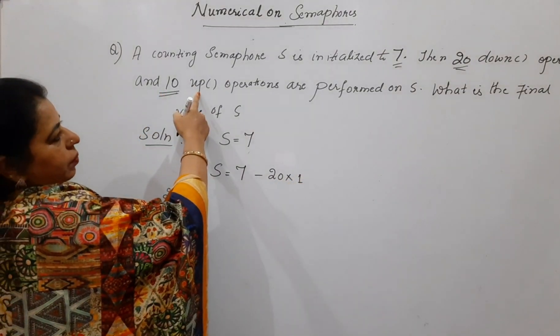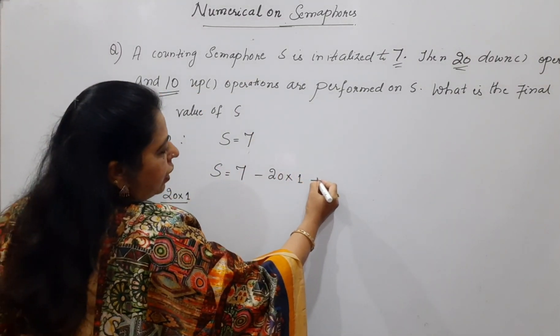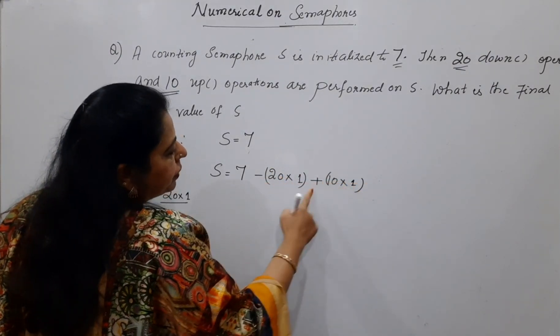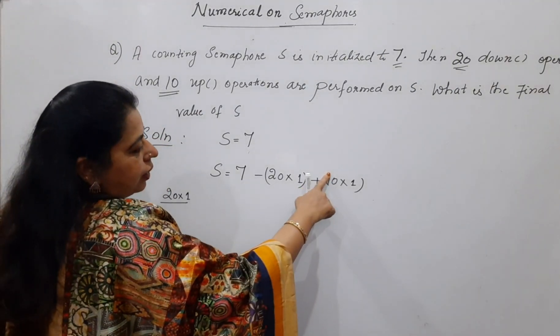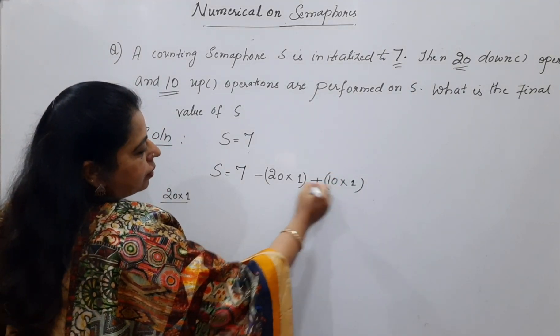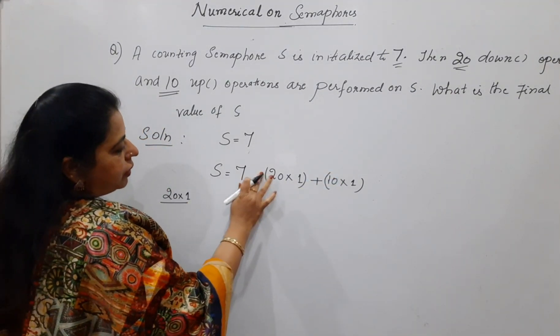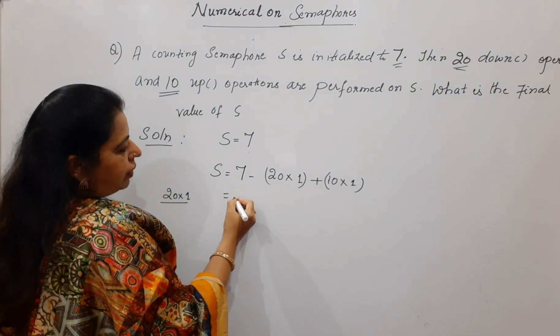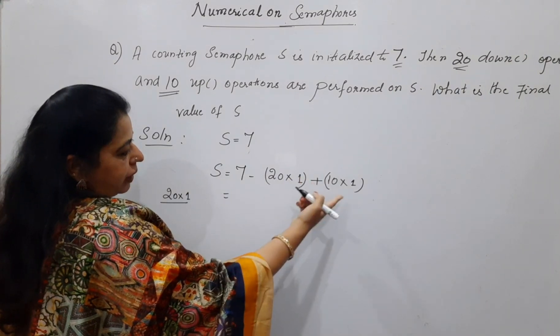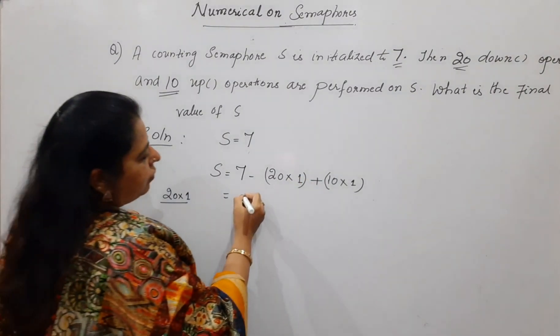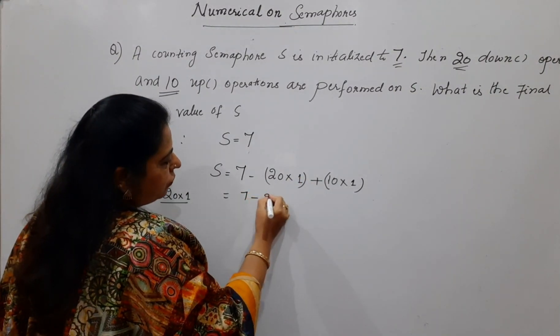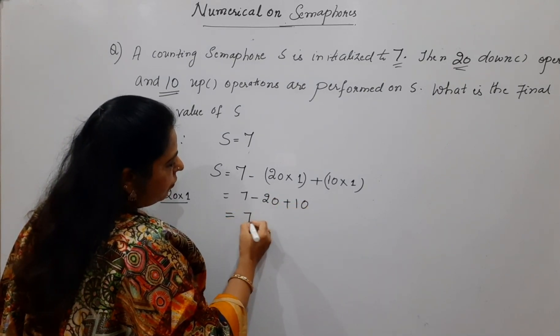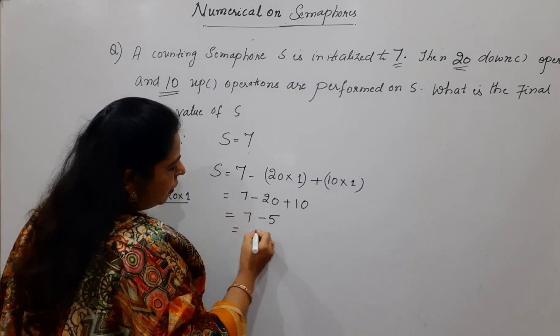Immediately followed by 10 up operations. 10 up operations is what? 10 times 1. Up, that is why you are writing plus here. Down you will be writing it as minus. So, your value is now your equation becomes after you simplify how much it will be? 7 minus 20 plus 10 that is equal to 7 minus 10 which is equal to negative 3.